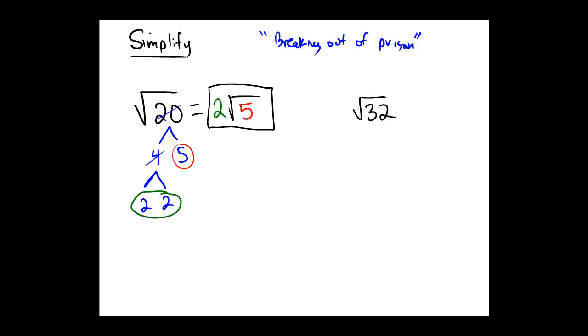Okay. Second problem. 32 is the same as 4 times 8, 4 is 2 times 2, 8 is 4 times 2, and 4 is 2 times 2. So, we've reduced the number 32 into its prime factorization.